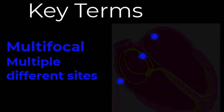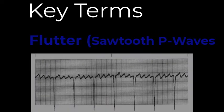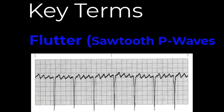Flutter is a term used primarily when talking about a specific atrial rhythm, and it appears with a classic sawtooth appearance of the P waves, usually at a rate close to 300. The ventricular rate may also be accelerated or it may be relatively normal, depending on how often those atrial impulses are conducted through the AV node and passed on to the ventricles.